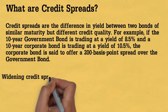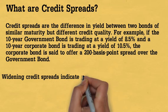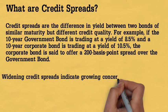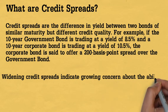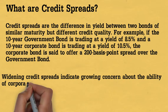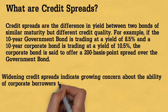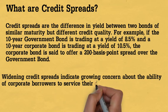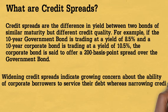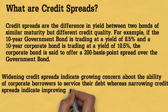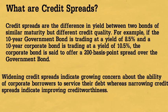The corporate bond is said to offer a 200 basis point spread over the government bond. Widening credit spreads indicate growing concern about the ability of corporate borrowers to service their debt, whereas narrowing credit spreads indicate improving credit worthiness.